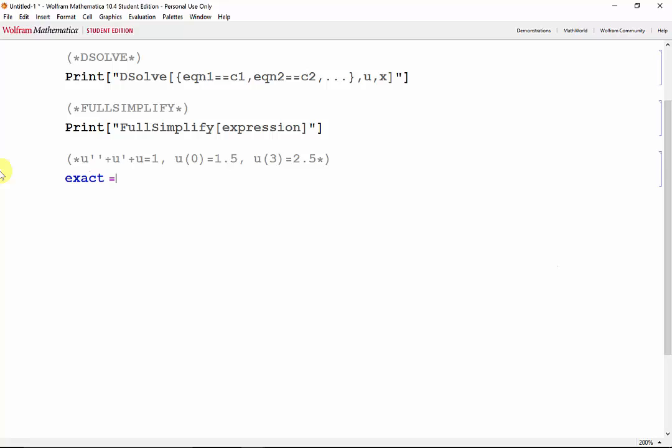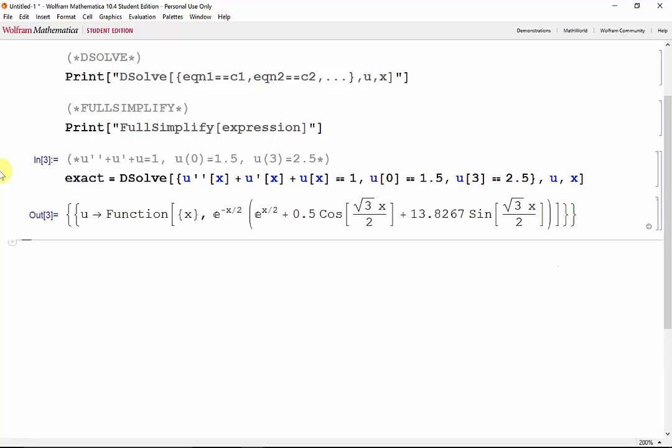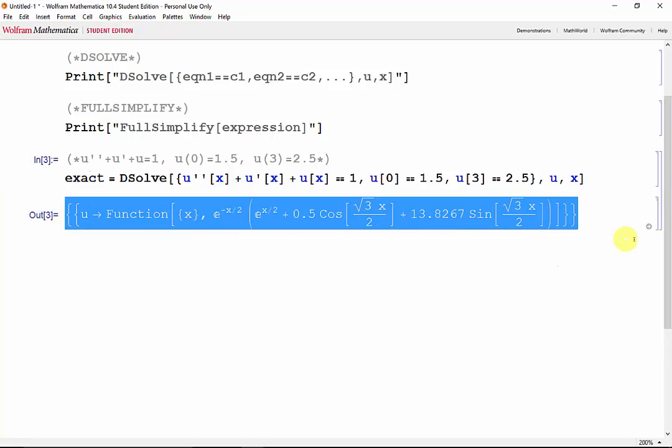We'll call the result exact and we'll use the DSolve function to solve u double prime of x plus u prime of x plus u of x equal to 1, and the boundary condition u of 0 equal to 1.5 and u of 3 equal to 2.5, and we're solving u with respect to x. Shift-Enter, and this is the function we get.